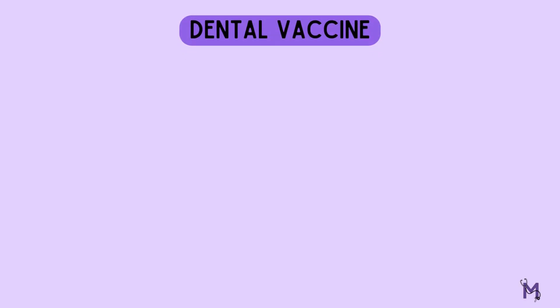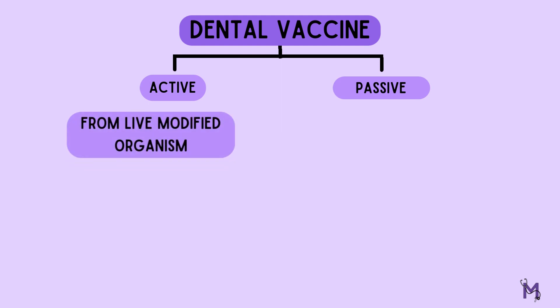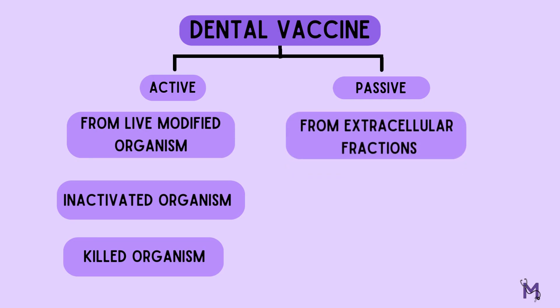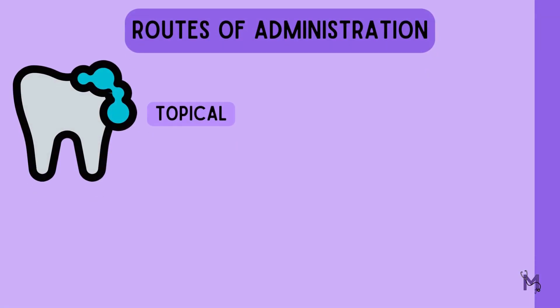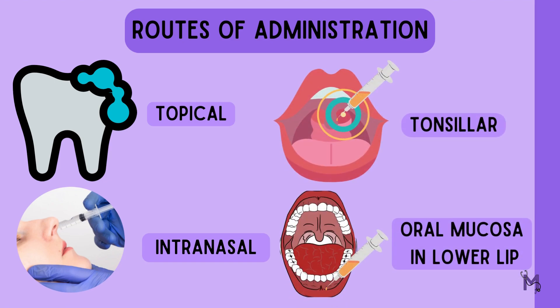Now, talking about the caries vaccine, getting a vaccine is a form of immunization which can be achieved in either active or passive fashion. It may be prepared from live modified organisms, inactivated or killed organisms, or from extracted cellular fractions, toxoids, or a combination of both. The routes of administration could be topical, intranasal, tonsillar, or through the oral mucosa in the lower lip area, as has been done in several research studies.